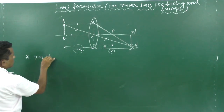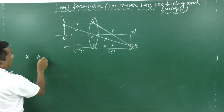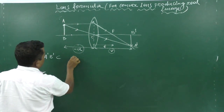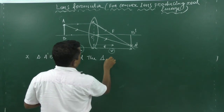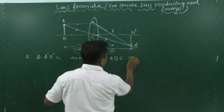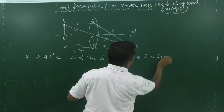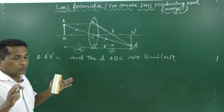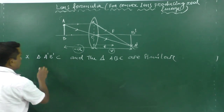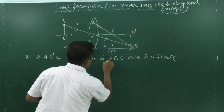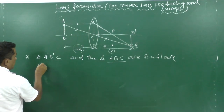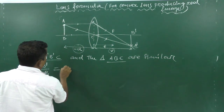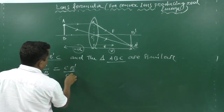In triangle A dash B dash C and triangle AB C, these two triangles are similar. Since they are similar, their corresponding sides are in the same ratio — which is your 10th class concept. So A dash B dash / AB = CB dash / CB. Let this be Equation 1.